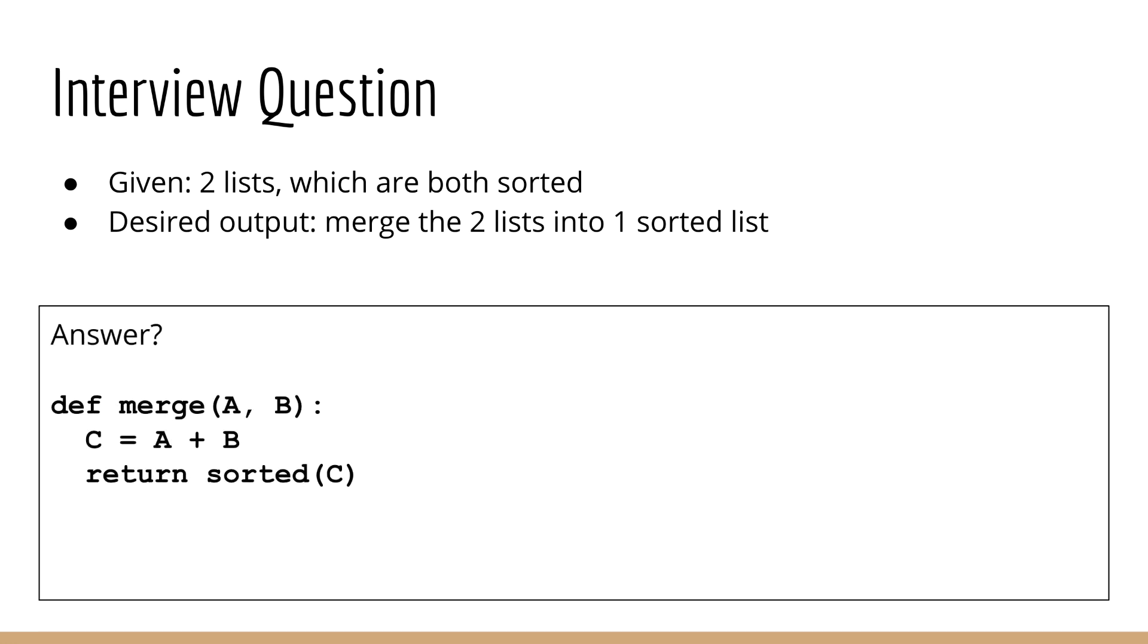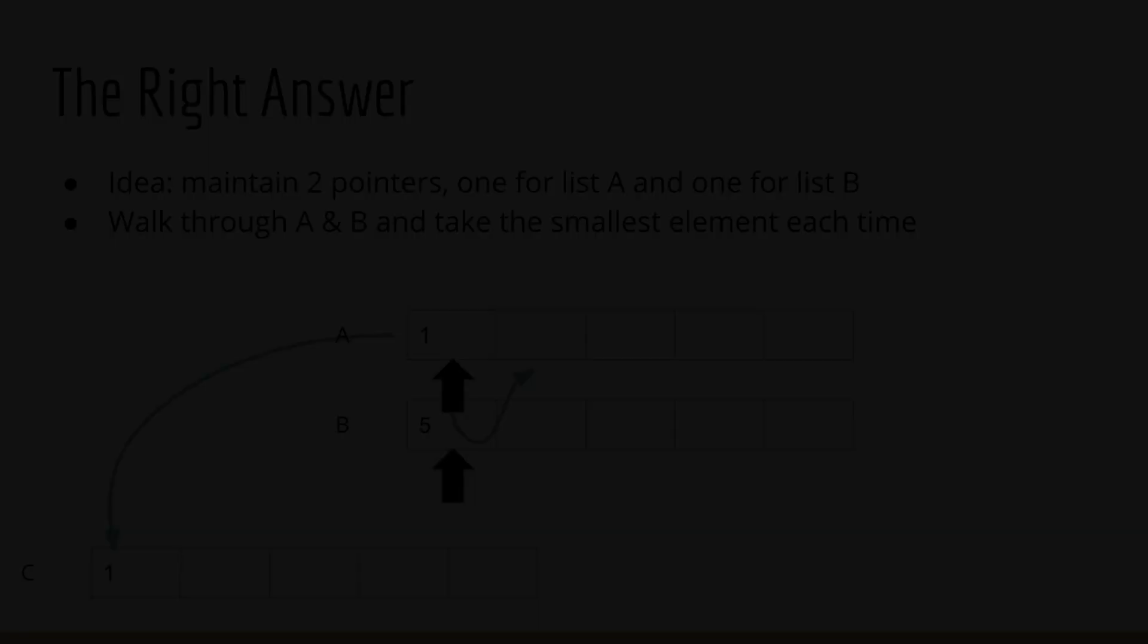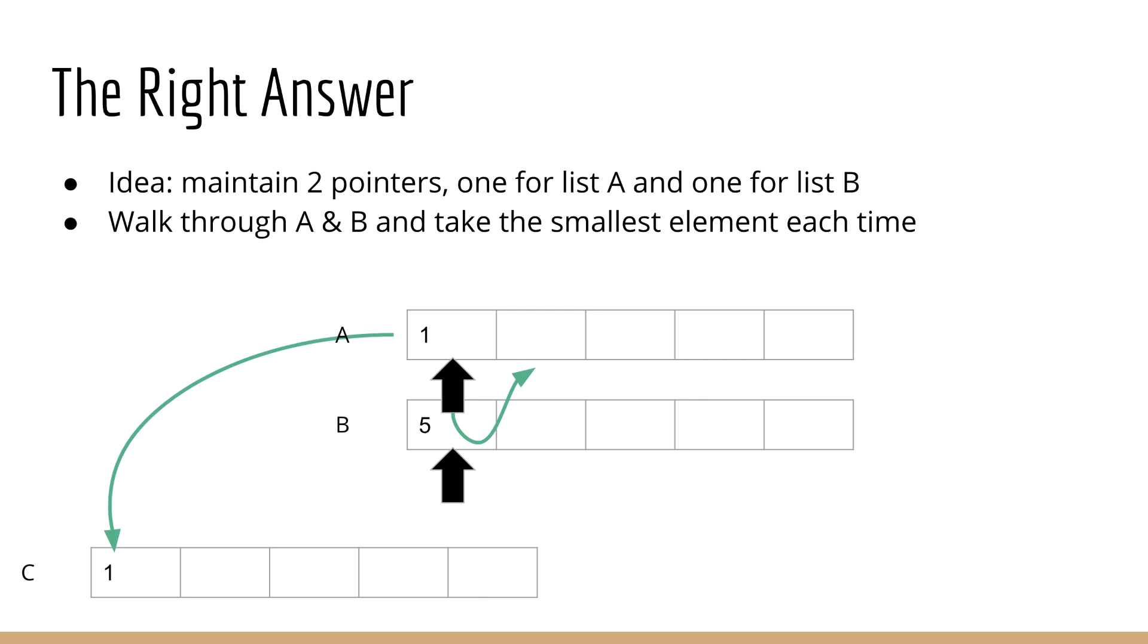Okay, so hopefully you thought of a solution to this question. First, I want to talk about an answer which you may have come up with if you tend not to think algorithmically, but more in terms of using APIs. And yes, just to be clear, this is not the correct answer. Although, during the interview process, we care about your thought process as well. So even if you can't think of the right answer, you might still get some points for explaining why this is not the optimal answer. Okay, so as you can see, this answer is pretty simple. All we do is concatenate the two lists and then sort the resulting list.